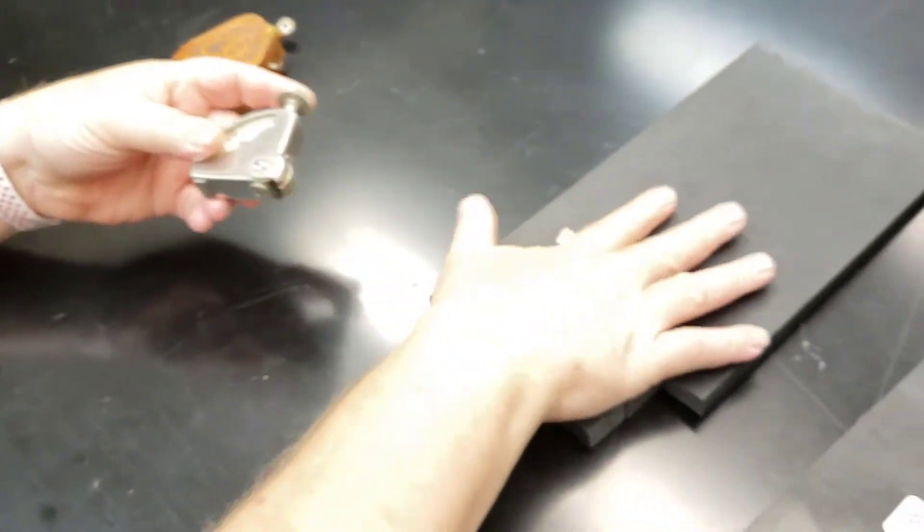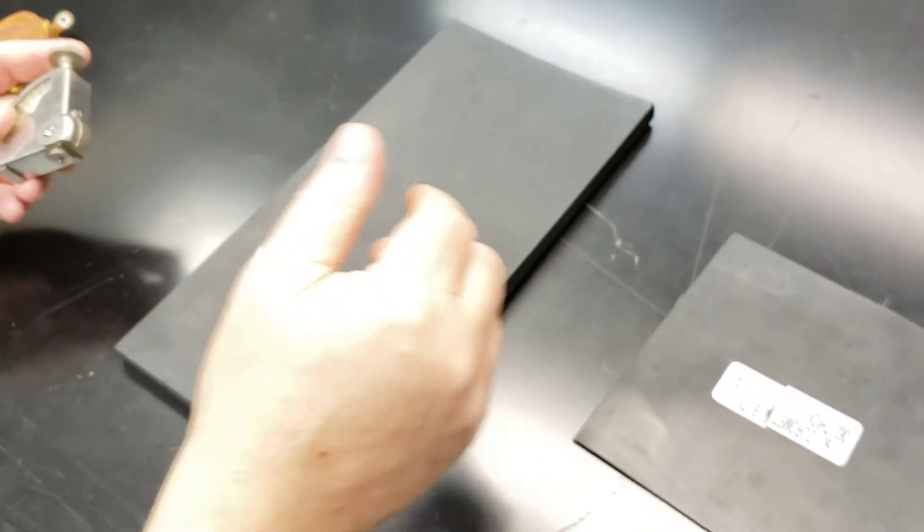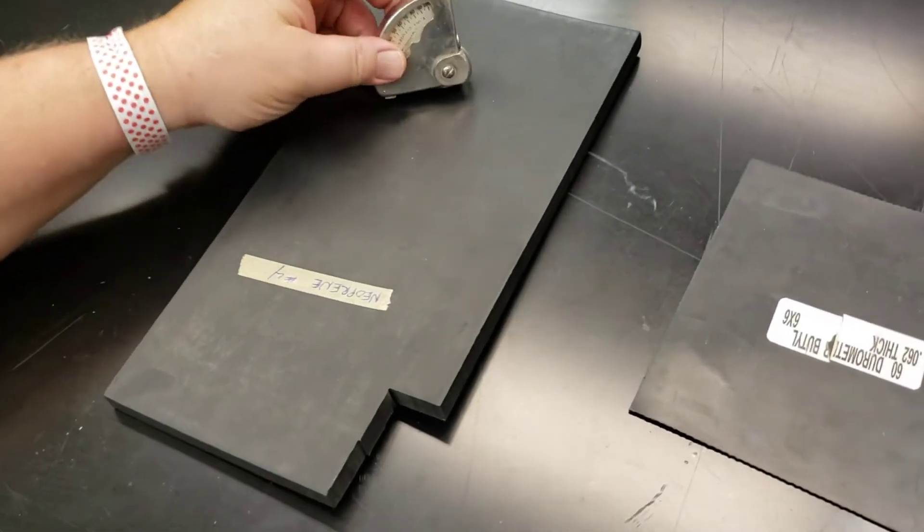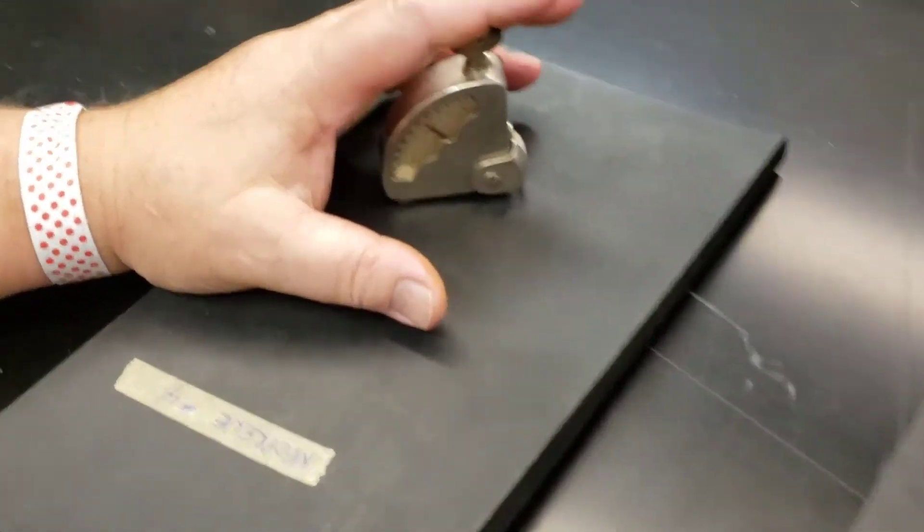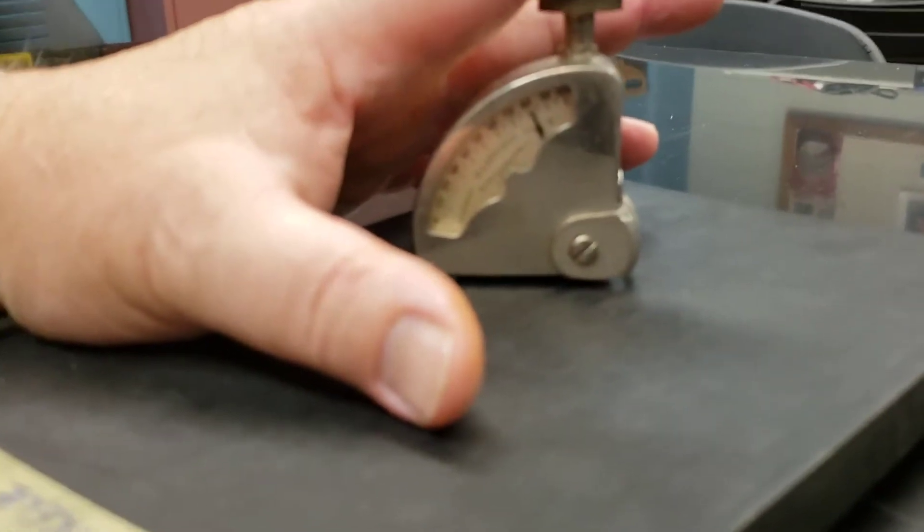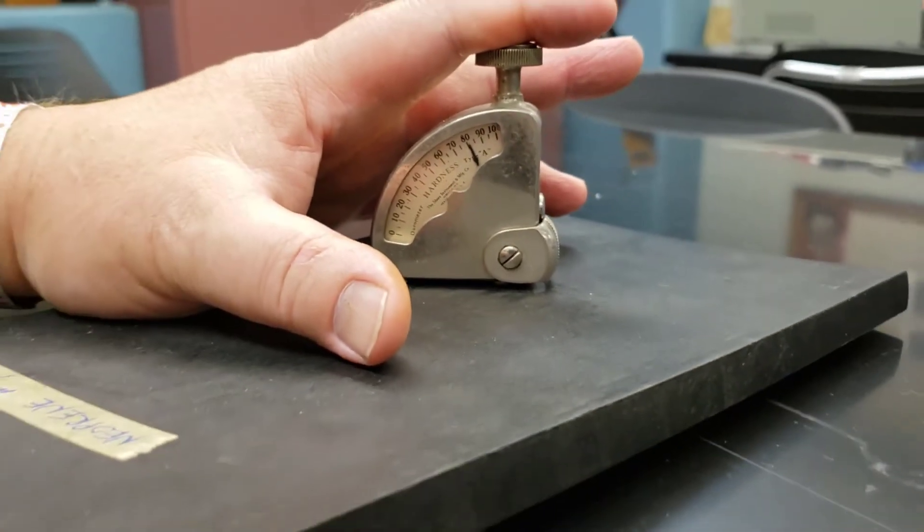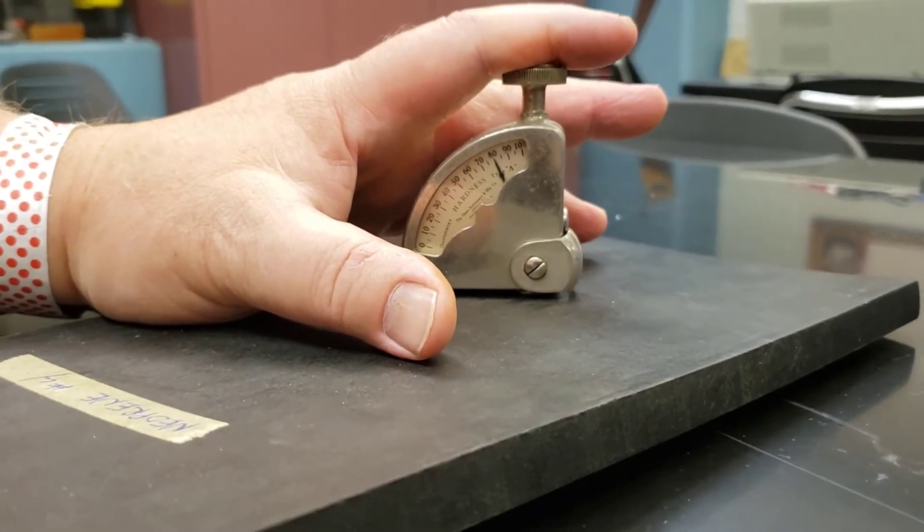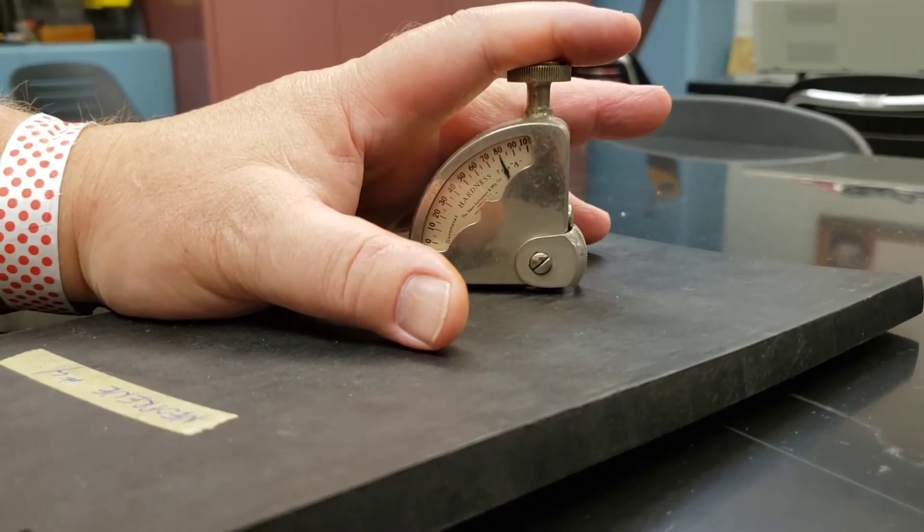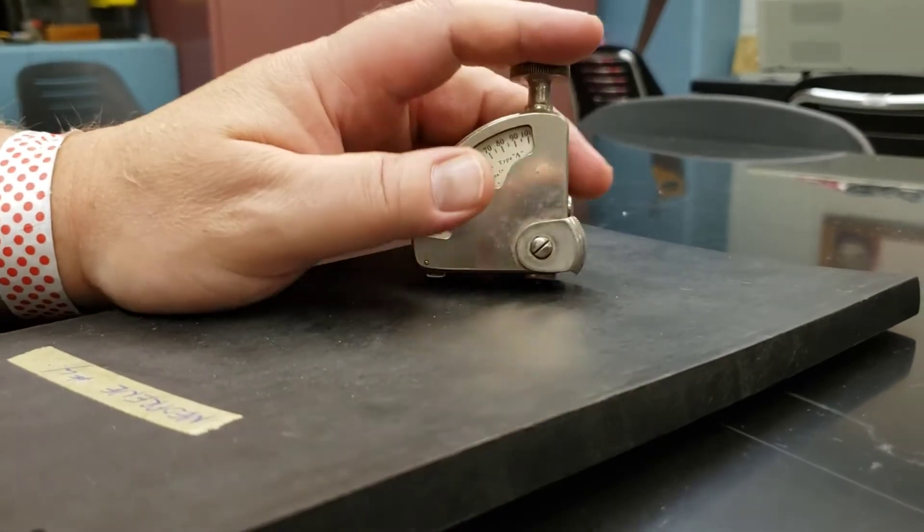So when we go to measure say this nice piece of neoprene, you set it down, we press and I can see that has a shore durometer reading of about 80. And you let go.